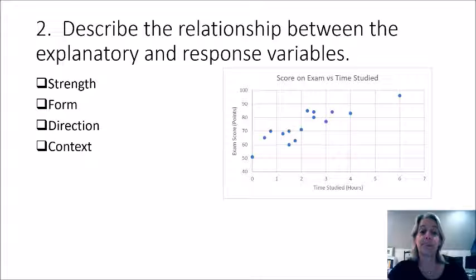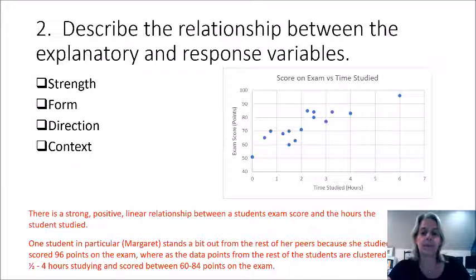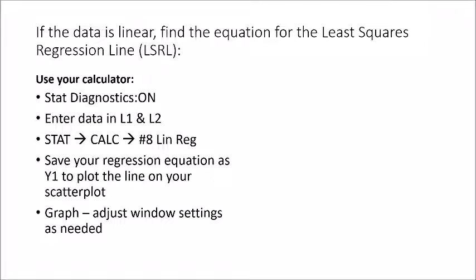So before we do any kind of equation, we're going to describe the relationship between our two variables. And notice that the question a lot of times doesn't include any context because that context is given to you in the prompt above. But every time you do this, you want to make sure and describe the strength, form, direction, and include context of the problem. So in this case, we might say there's a strong positive linear relationship between a student's exam score and the hours in time that the student studied for that exam. And then we want to note any unusual points. Well, in this case, this point off to the right that is Margaret's score, which is that she studied about six hours and received a 96 on her test, which was much better than the rest of the students. So we need to go ahead and identify that as a somewhat unusual point in our data set.